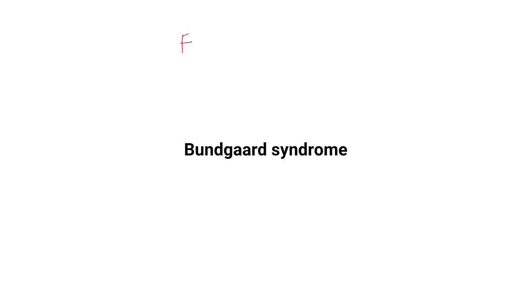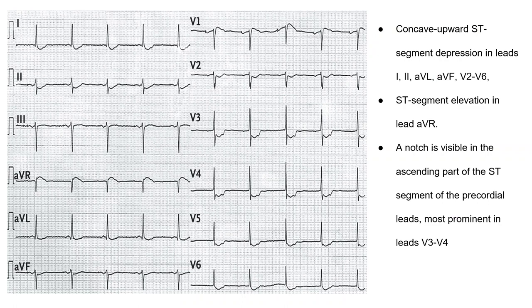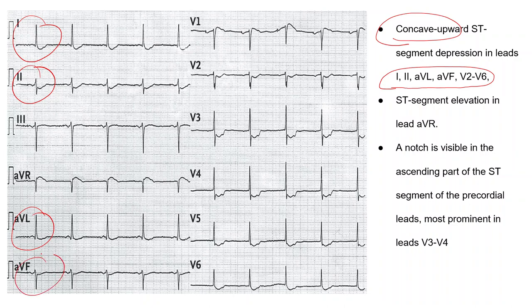Next is Bandgaard syndrome — not very important, but for the sake of completion: this is familial ST segment depression syndrome. The ECG is characterized by concave upward ST segment depression in leads I, AVL, and V2 to V6 — you can see ST segment depression with concavity upwards across multiple leads. Another important finding is notching in V3 and V4 in the ascending part of the depressed ST segment. That is a key finding in Bandgaard syndrome.